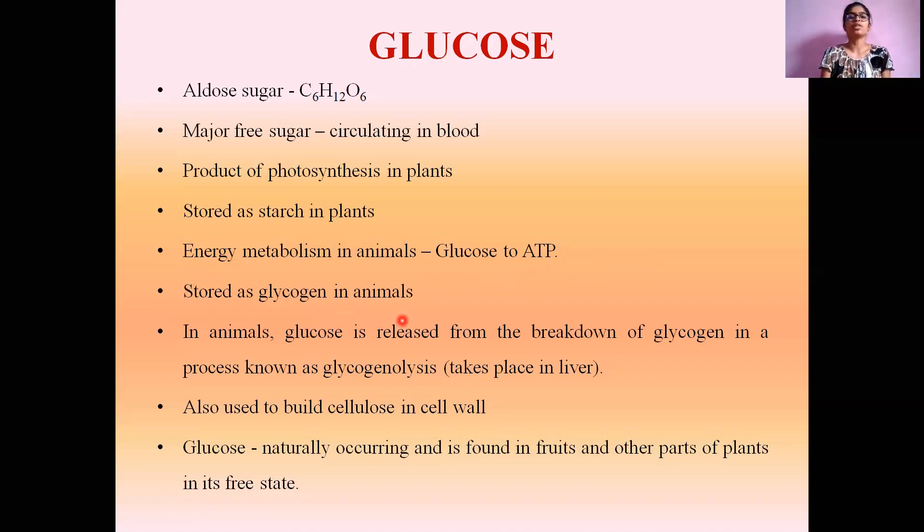Not all glucose is converted to glycogen. The glucose needed for energy conversion is used up, and the excess glucose in the bloodstream is converted to glycogen and stored in the liver. In animals, glucose is released from the breakdown of glycogen in a process known as glycogenolysis, which also takes place in the liver.